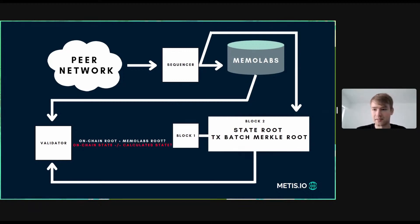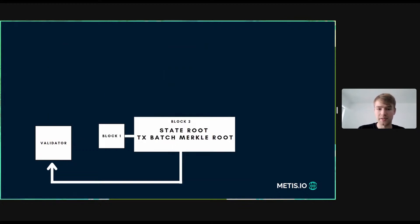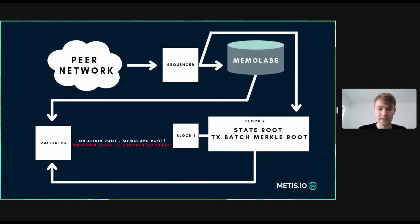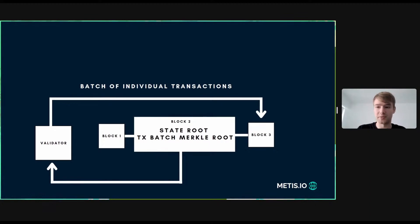Now let's say the transaction data was correct, but the calculated state is not correct. This means the state the sequencer posted is not correct — there was a malicious sequencer. In this case, the validator takes the batch of individual transactions received from MemoLabs, since the on-chain root and MemoLabs root were verified as matching, and posts them on-chain. This becomes an optimistic rollup mechanism where all the data is on-chain and a fraud proof can be posted to slash the sequencer.